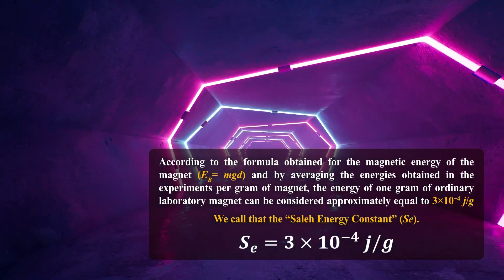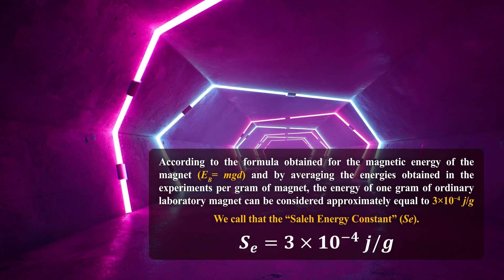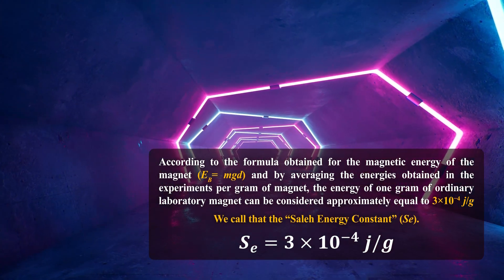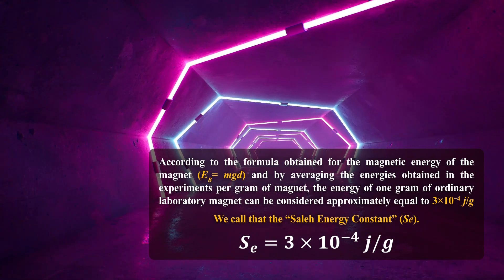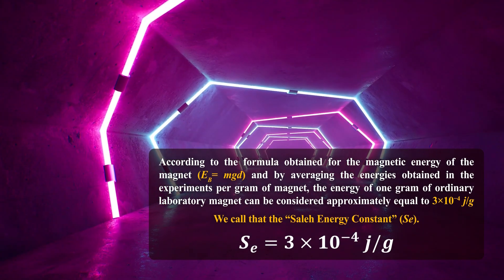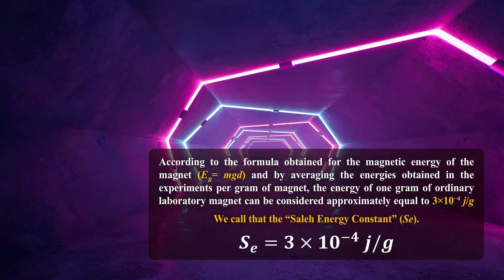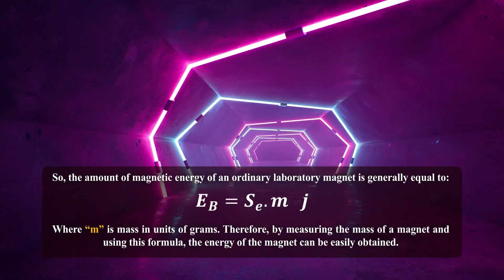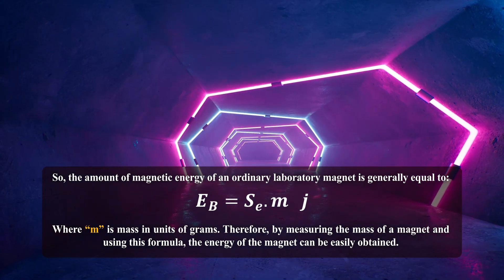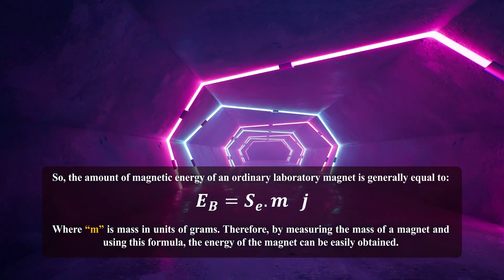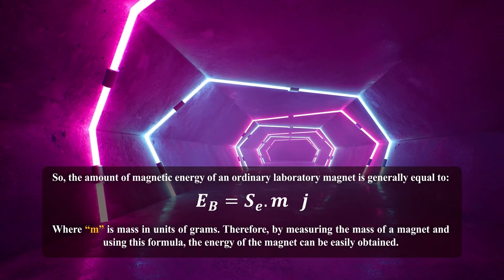According to the formula obtained for the magnetic energy of the magnet, and by averaging the energies obtained in the experiments per gram of magnet, the energy of 1 gram of an ordinary laboratory magnet can be considered approximately equal to 3 multiplied by 10 to the power of minus 4 joules per gram. We call this the solid energy constant, S of E. So the amount of magnetic energy of an ordinary laboratory magnet is generally equal to this value times m, where m is the mass in units of grams. By measuring the mass of a magnet and using this formula, the energy of the magnet can be easily obtained.